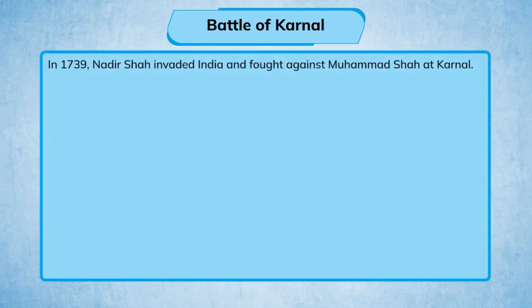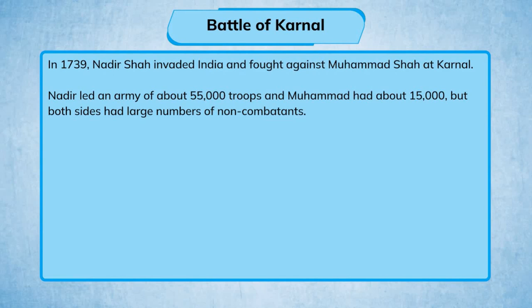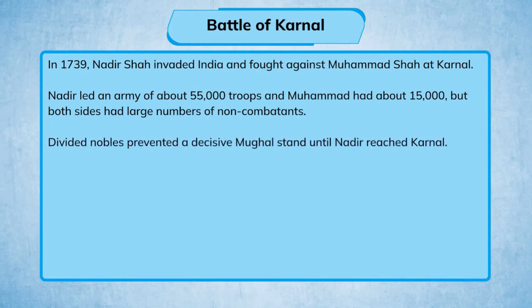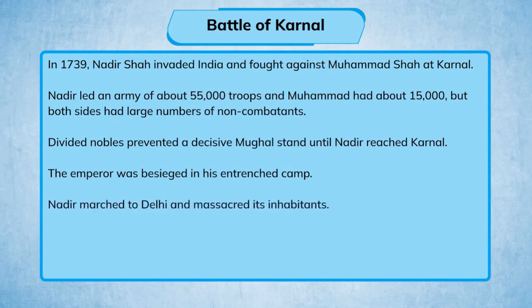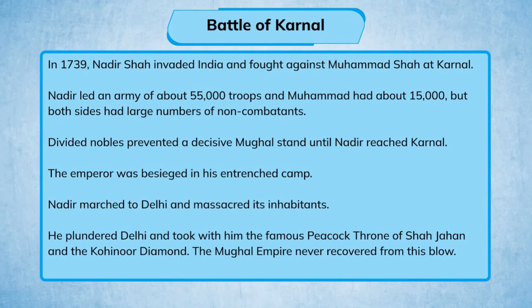Battle of Karnal: In 1739, Nadir Shah invaded India and fought against Muhammad Shah at Karnal. Nadir led an army of about 55,000 troops while Muhammad had only about 15,000, though both sides had large numbers of non-combatants. Divided nobles prevented a decisive Mughal stand until Nadir reached Karnal, where the emperor was besieged in his entrenched camp. Nadir marched to Delhi, massacred its inhabitants, plundered the city, and took with him the famous Peacock Throne of Shah Jahan and the Kohinoor diamond. The Mughal Empire never recovered from this blow.